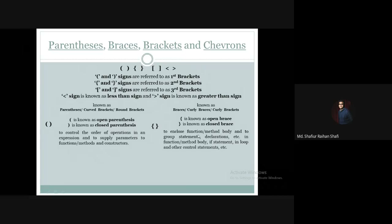What do we use braces for? To enclose a function or method body, and to group statements and declarations in a function or method body. When we refer to the definition of a method, we use braces to indicate the scope and overall body. We also use braces in if statements, various types of loops, and other control statements.